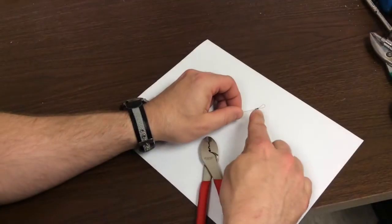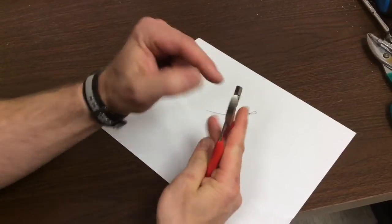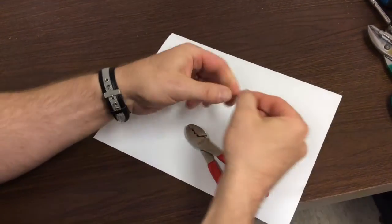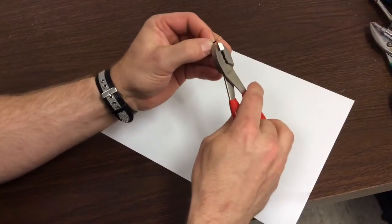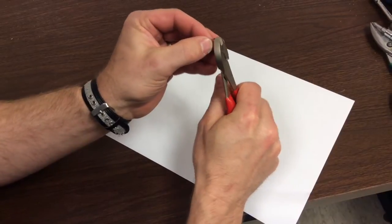Once you have your loop made, we're going to crimp the crimp using our crimping tool. We're going to use the top edge of our crimping tool and crimp it three times in that area. Each time you crimp, you have to give it a pretty good squeeze. If you squeeze too hard, you might actually cut through it.